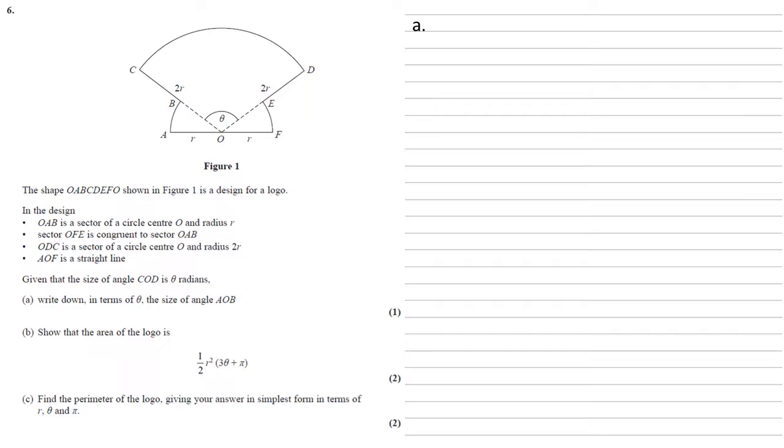The shape shown in Figure 1 is a design for a logo. In the design, OAB is a sector of a circle with centre O and radius R. Sector OFE is congruent to sector OAB. ODC is a sector of a circle centre O and radius 2R.